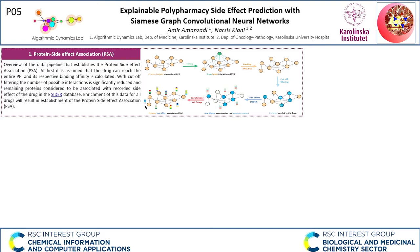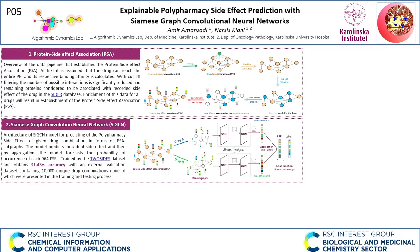First, we established the protein side effect association by embedding them as node features of the human protein-protein interaction network. By assuming that the drug can reach the entire PPI network, their respective binding affinity towards each protein was calculated. Applying cutoff filtering significantly reduces the number of possible interactions. The remaining proteins are considered to be associated with recorded side effects of the drug in the CIDR database. Enrichment of this data for all available drugs results in the establishment of the protein side effect association, or PSA. Next, for each drug, we extract its PSA subgraph, which contains the proteins with a high binding affinity towards the corresponding drug. These subgraphs are then used in pairs as the input of the model.